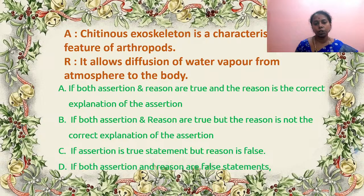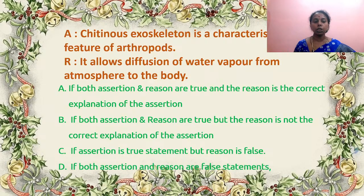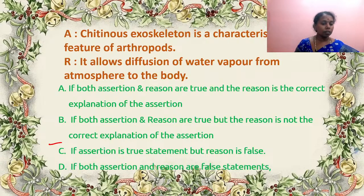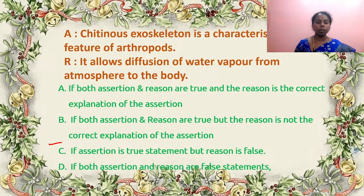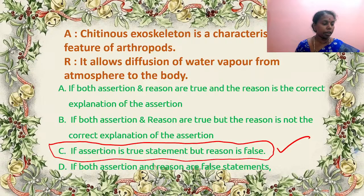Chitinous exoskeleton is a characteristic feature of arthropods. Reason: it allows diffusion of water vapor from the atmosphere to the body. Assertion is correct — arthropods have chitin. But the reason states diffusion of water vapor from atmosphere to body, which is incorrect — diffusion of water does not happen from the body to the atmosphere. Answer is C.